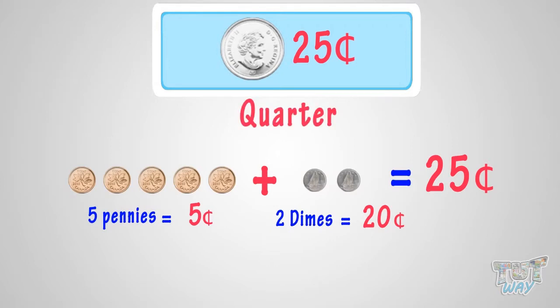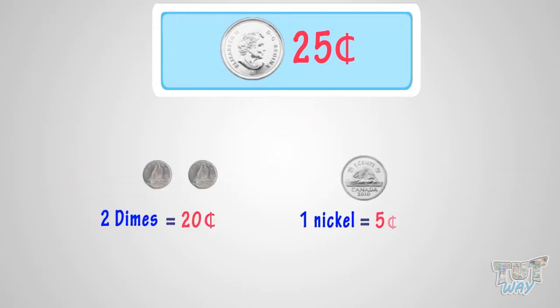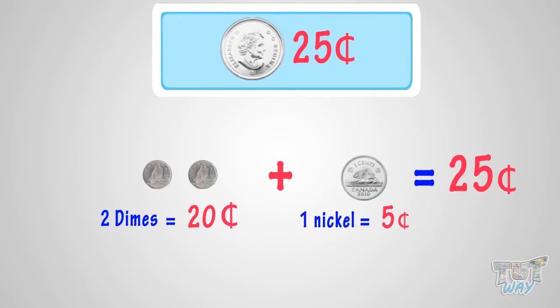There can be just so many ways. See one more way: one nickel and two dimes. Two dimes make 20 cents, one nickel makes 5 cents, so in total we will have 25 cents. So we can exchange this set of coins too for a quarter.